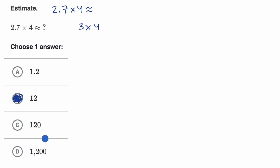You can see that these other answers seem quite unreasonable. If I take something and multiply it times four, I shouldn't get an answer that is less than my original number. To get 120 from something roughly equal to three times four doesn't make sense. It definitely doesn't make sense to get 1,200.